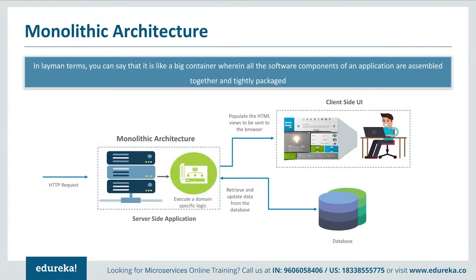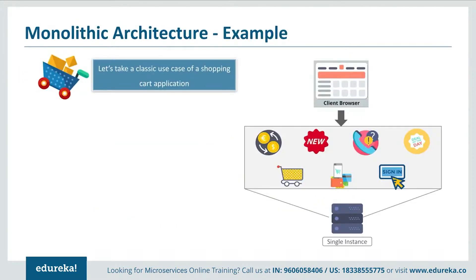What do you think monolithic architecture was? It was like a big container where all the software components of an application were tightly packed together. Let's look at the client-server model. As a user, when you open a web UI, you just see a website. But behind the scenes, the server-side application has different features which have to be handled together — such as handling HTTP requests, retrieving and updating data from a database, and executing domain-specific logic — all put on a single framework. So if any one feature had not worked, the complete system would go down. Also, if only one feature had to be updated, the complete system had to be built again.